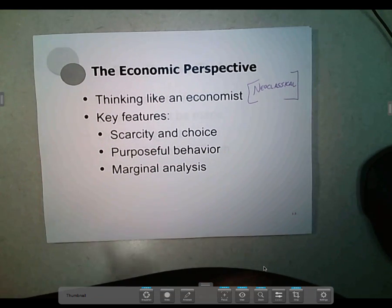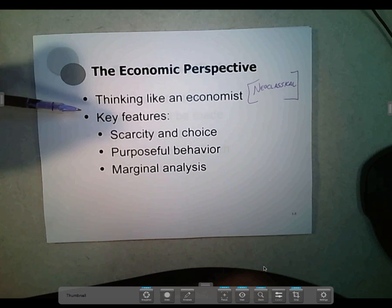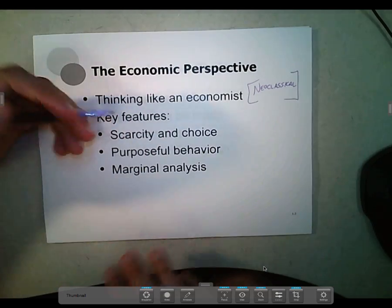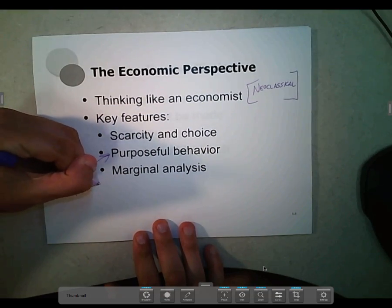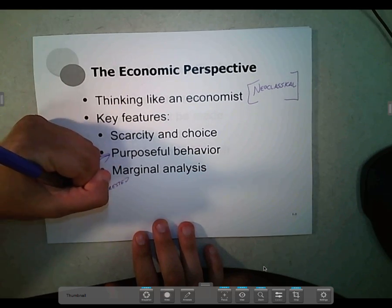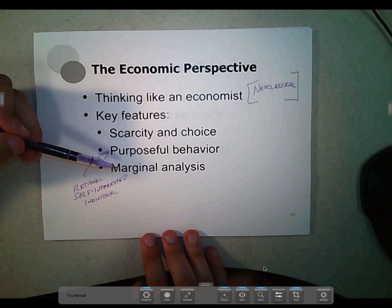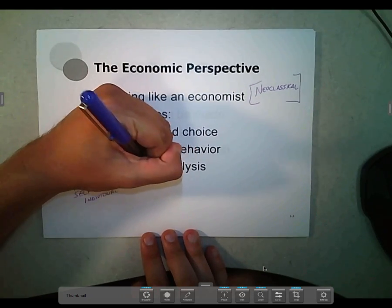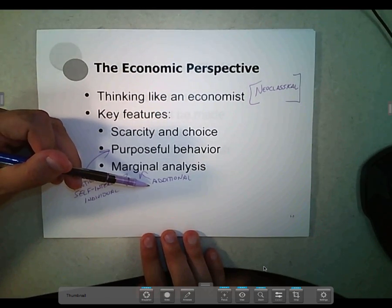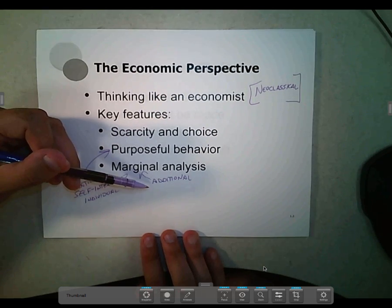A neoclassical economist understands the decision process as centered on scarcity and choices made under scarcity conditions. The behavior of individuals and firms is purposeful — made by a rational, self-interested individual. The analysis conducted is done on a marginal basis. The word 'marginal' means additional — specifically, how does the benefit of doing something one more time compare to the cost of doing it one more time.